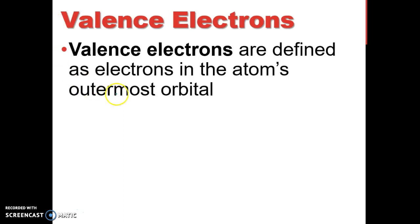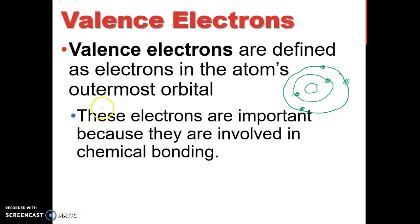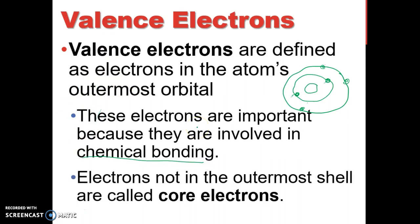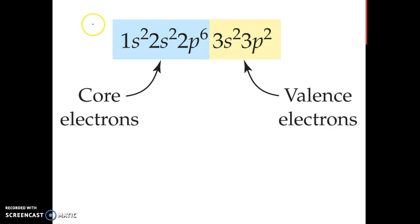Valence electrons are defined as electrons in the atom's outermost orbital. In middle school you saw this Bohr diagram where you had two here and maybe three here. The outer shell, this outer shell right here, is the valence electrons. These electrons are important because we're going to use them all year long to do chemical bonding. Make sure you write all this slide down. Electrons that are not on the outermost shell, like these two right here on the inner side, those are the core electrons.